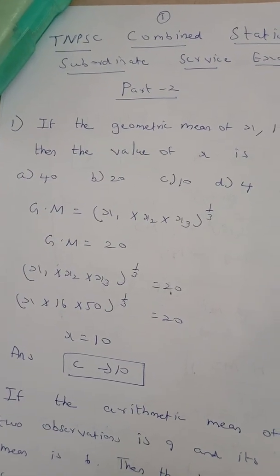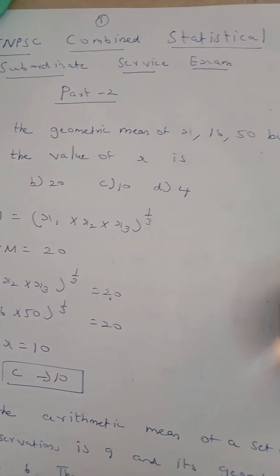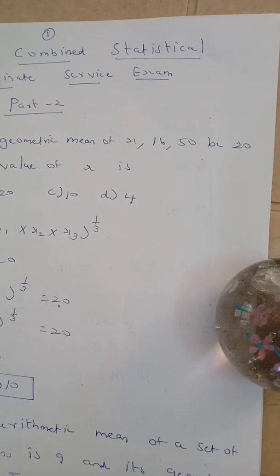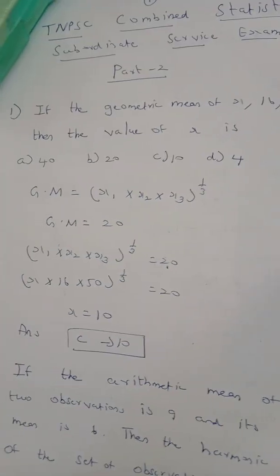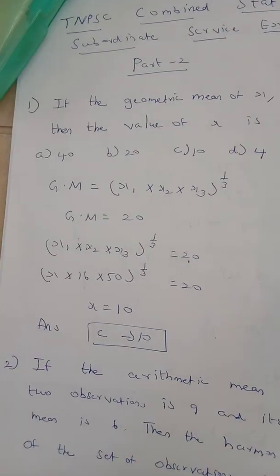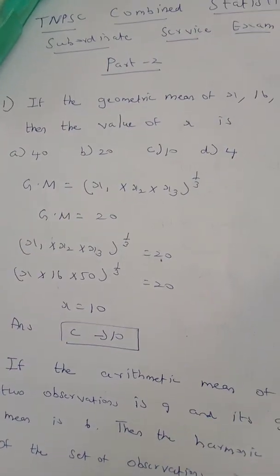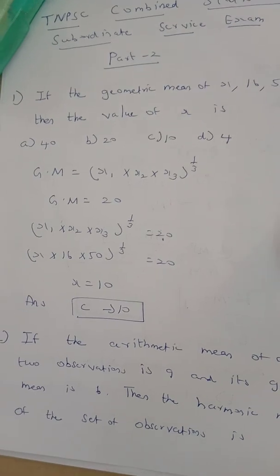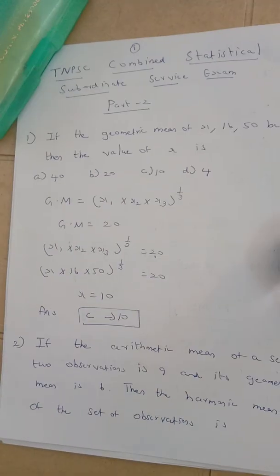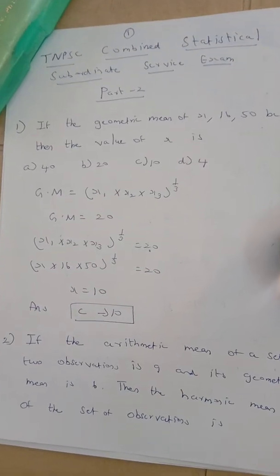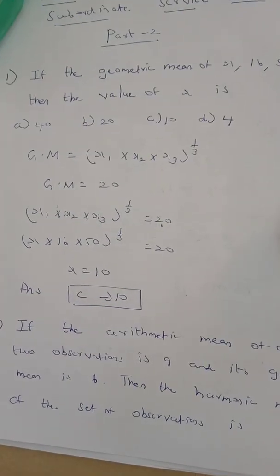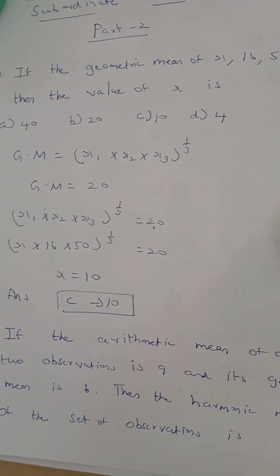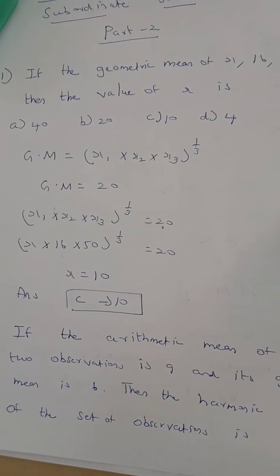Question number 1. If the geometric mean of x, 16, and 50 is 20, then the value of x is. The geometric mean is the nth root of the product of values. Here, geometric mean is 20, equal to 3 values, so n is equal to 3.